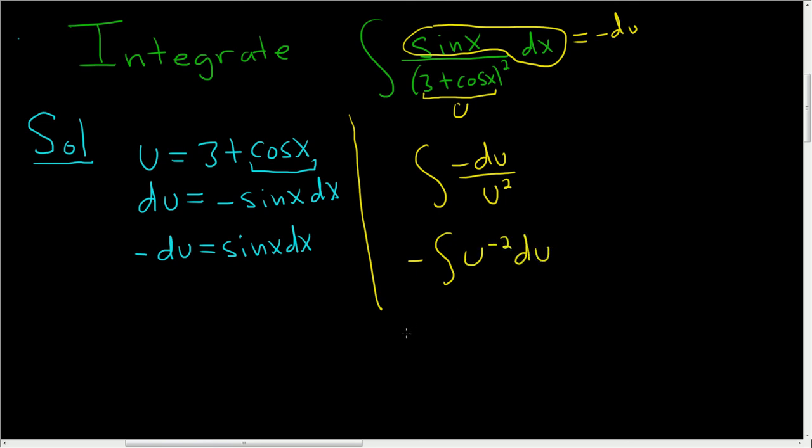Okay, now we'll use the power rule. So this is equal to negative u. We add 1, so 1 plus negative 2 is negative 1. We divide by negative 1, right? You add 1 to this number, and then you divide by it, plus c.